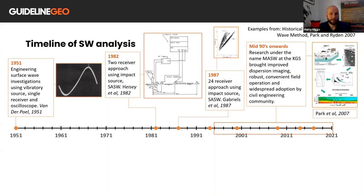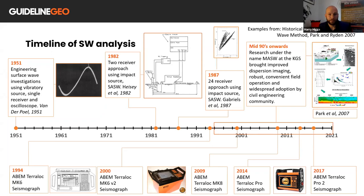Modern methods of MASW developed in the 1990s are born largely out of work done at the Kansas Geological Survey, and they led to widespread adoption by the civil engineering community. Iterations in digital seismographs over recent years, along with development of new and more advanced processing methods and investigation methods, allow users to increasingly understand the near surface with greater confidence.